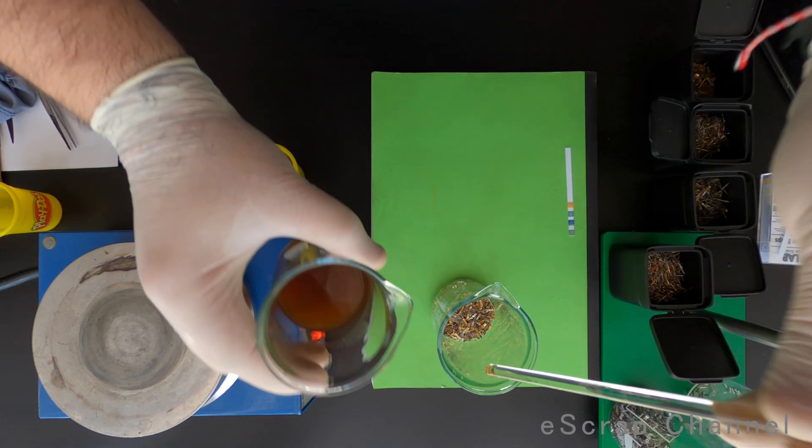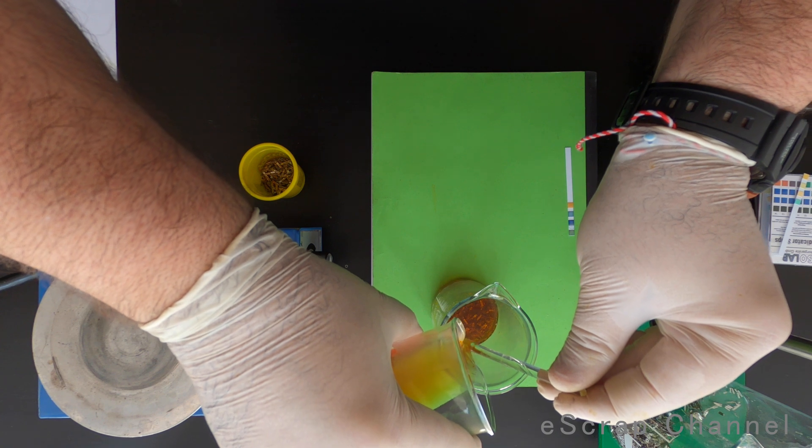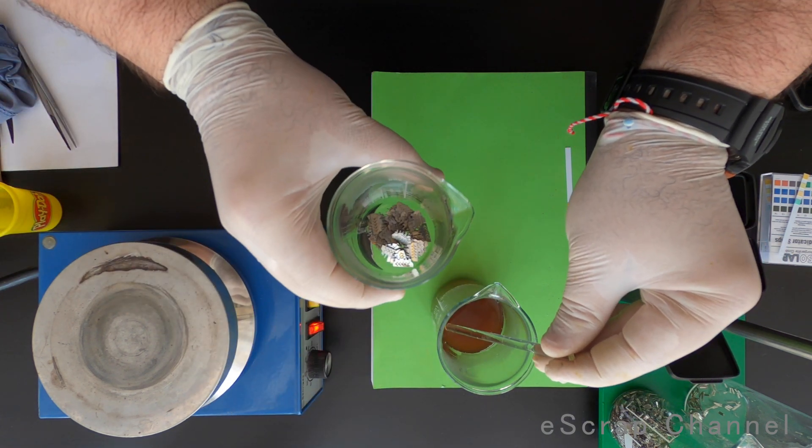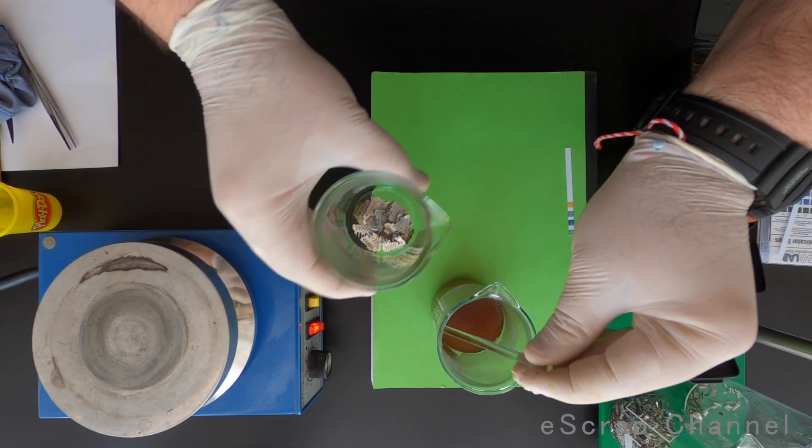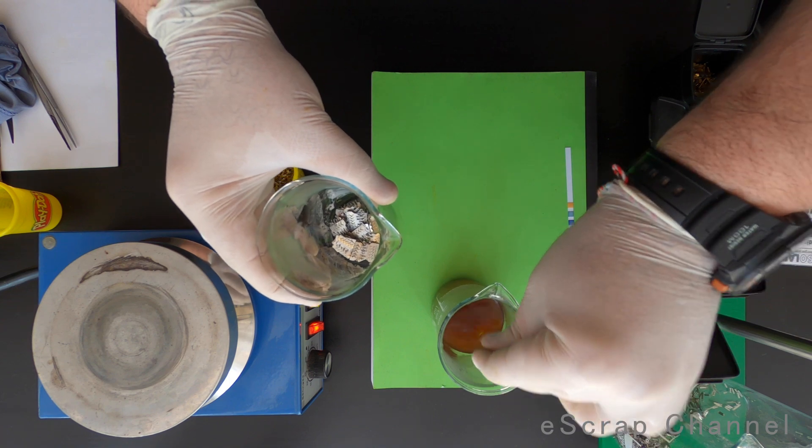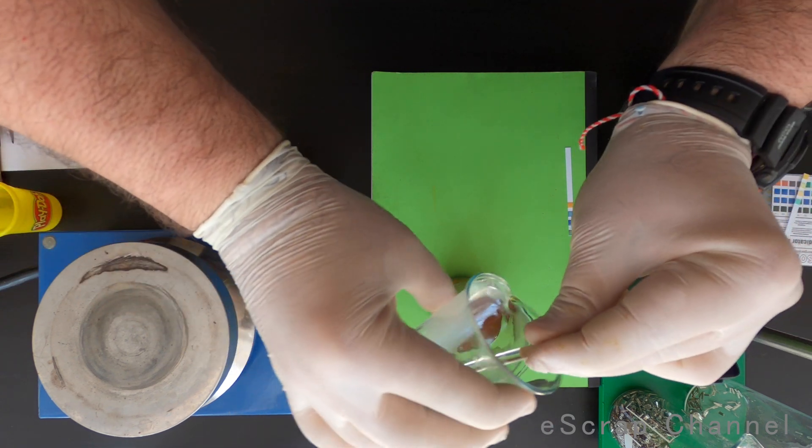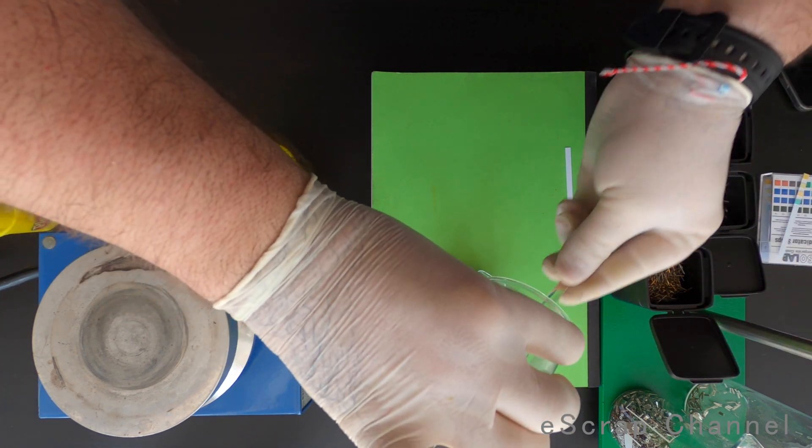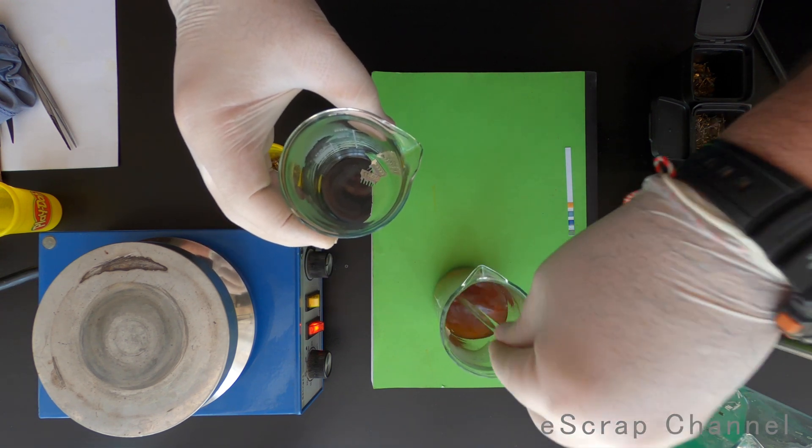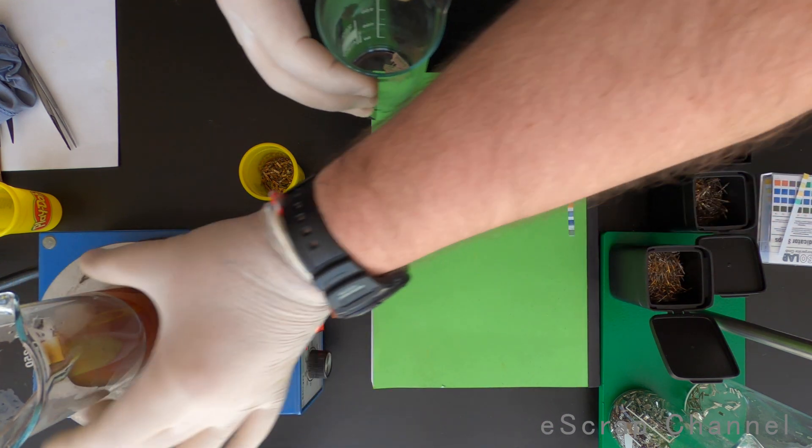We are ready for the next batch. Let's pour the solution inside and see what is left here. A little gold plating is left. Maybe I was too quick from my side. So what I will do now, I will add this here so they will be processed. I will return to the hot plate and let's see.